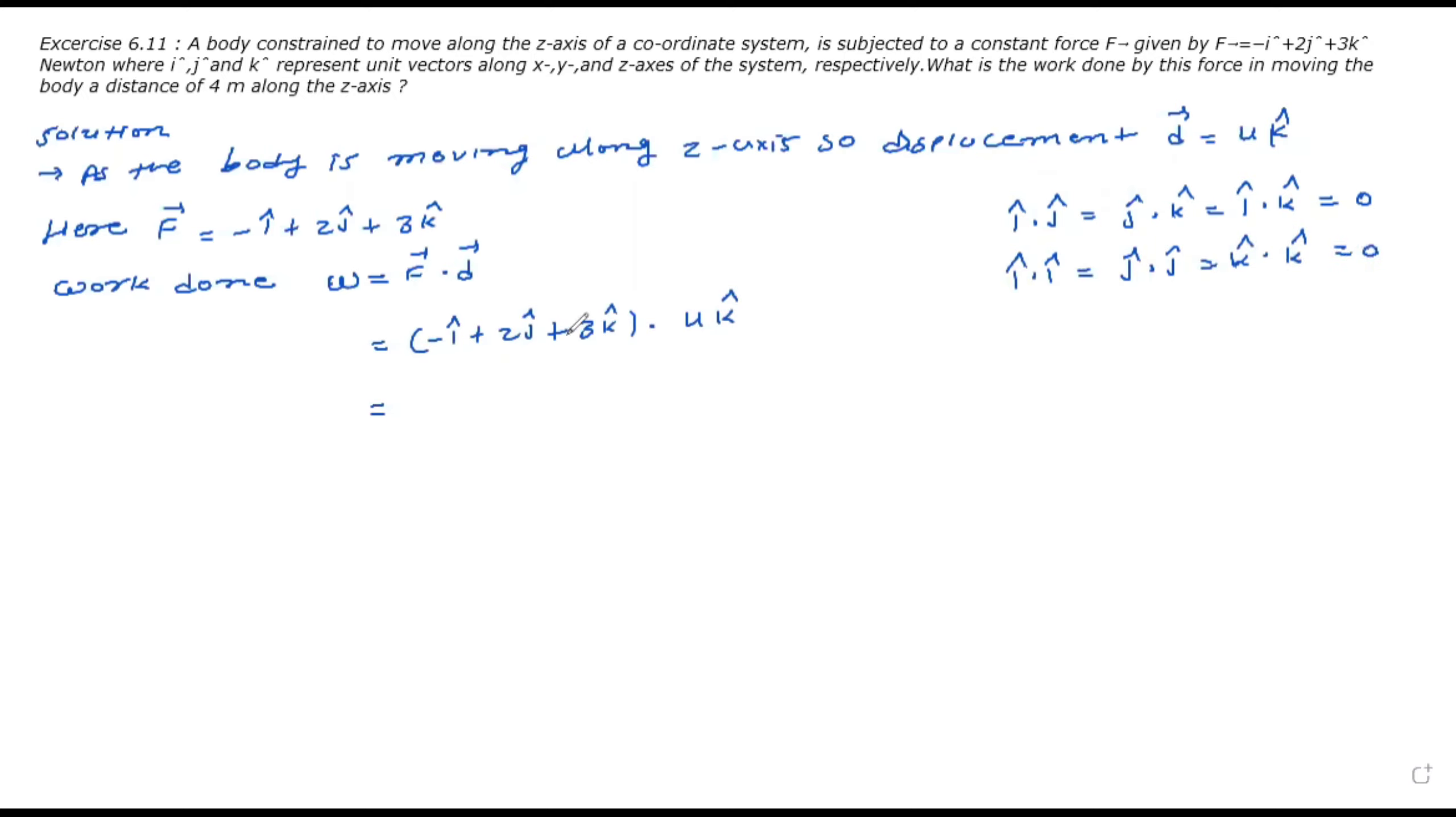So in doing this dot product of these two vectors, in the first term, i dot 4k-cap becomes 0. So 2j-cap dot 4k-cap also becomes 0. But 3k-cap dot 4k-cap becomes 3 times 4 which is 12, and k dot k becomes 1. So here we can say work done is 12 joule by this force.